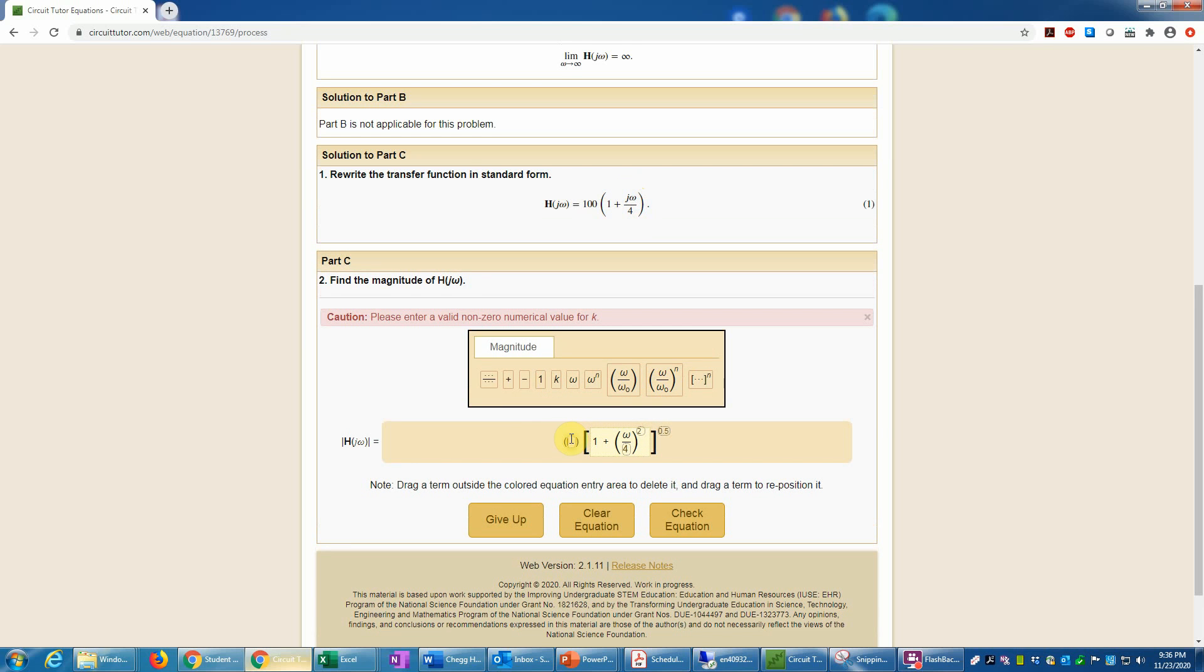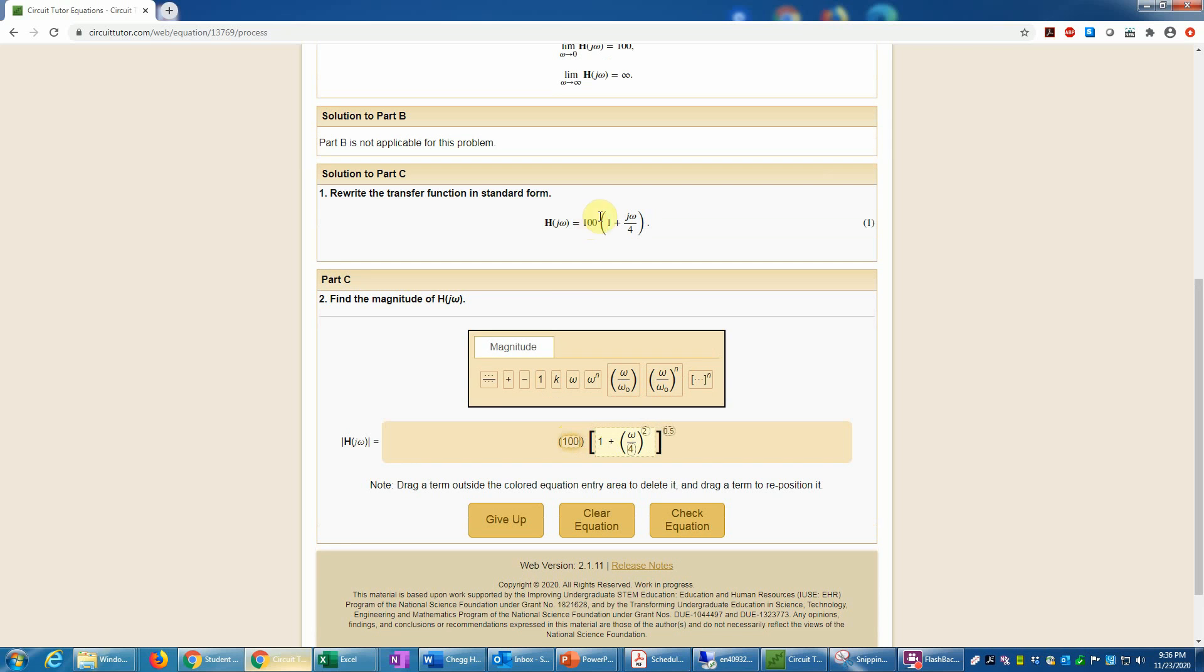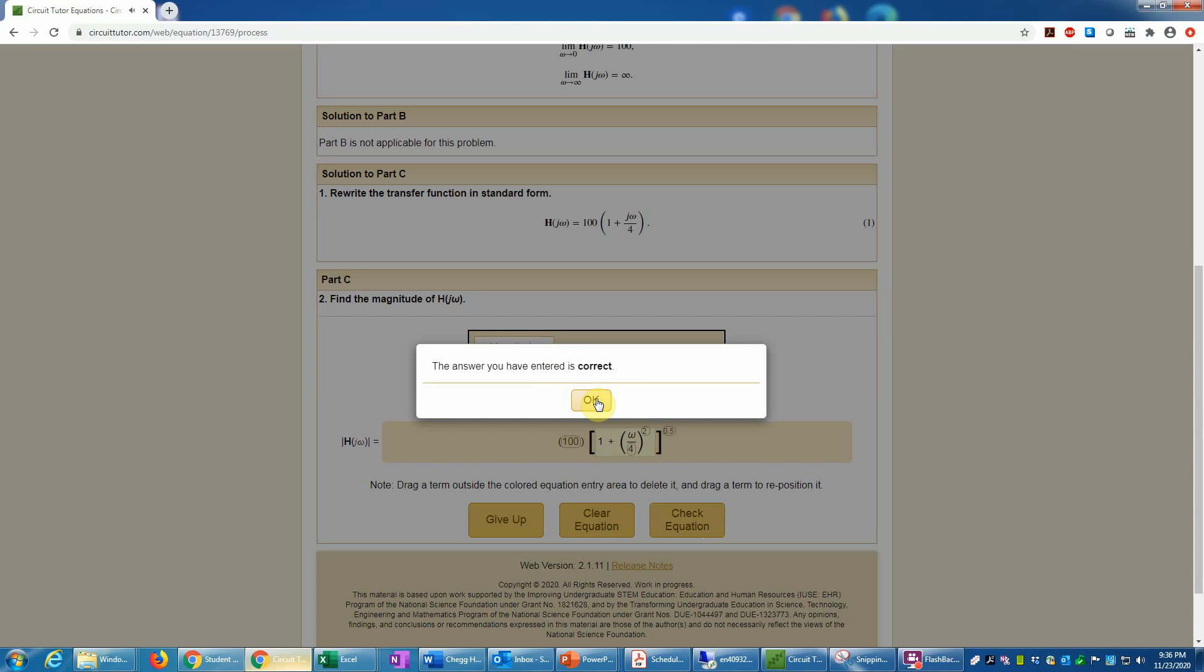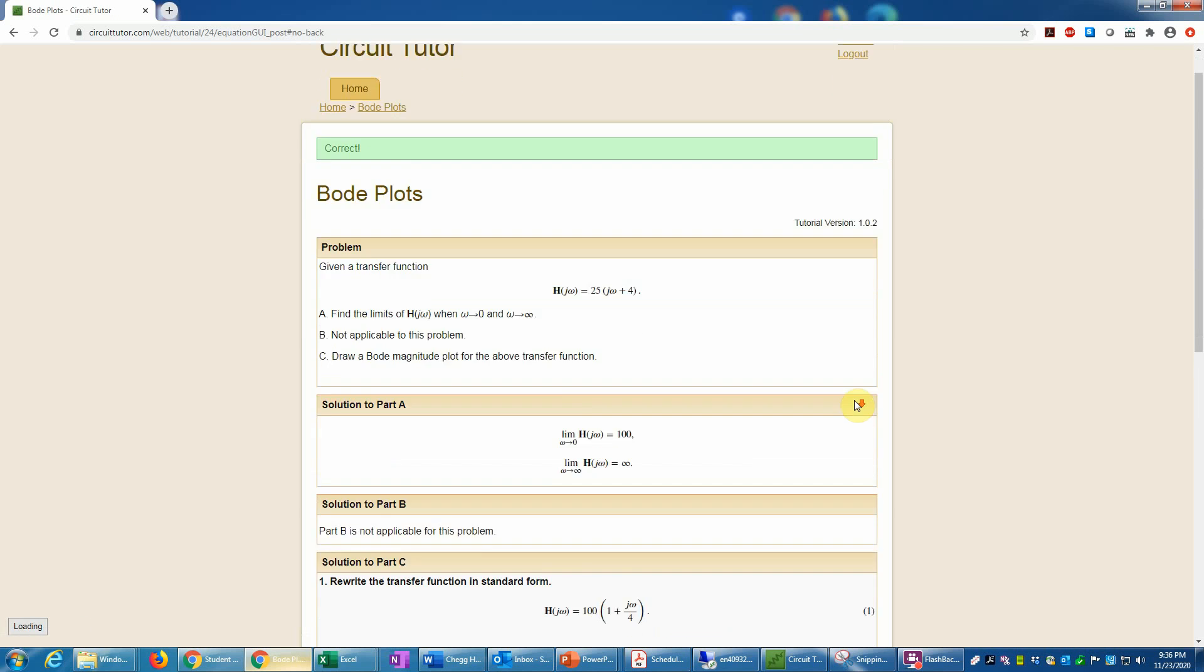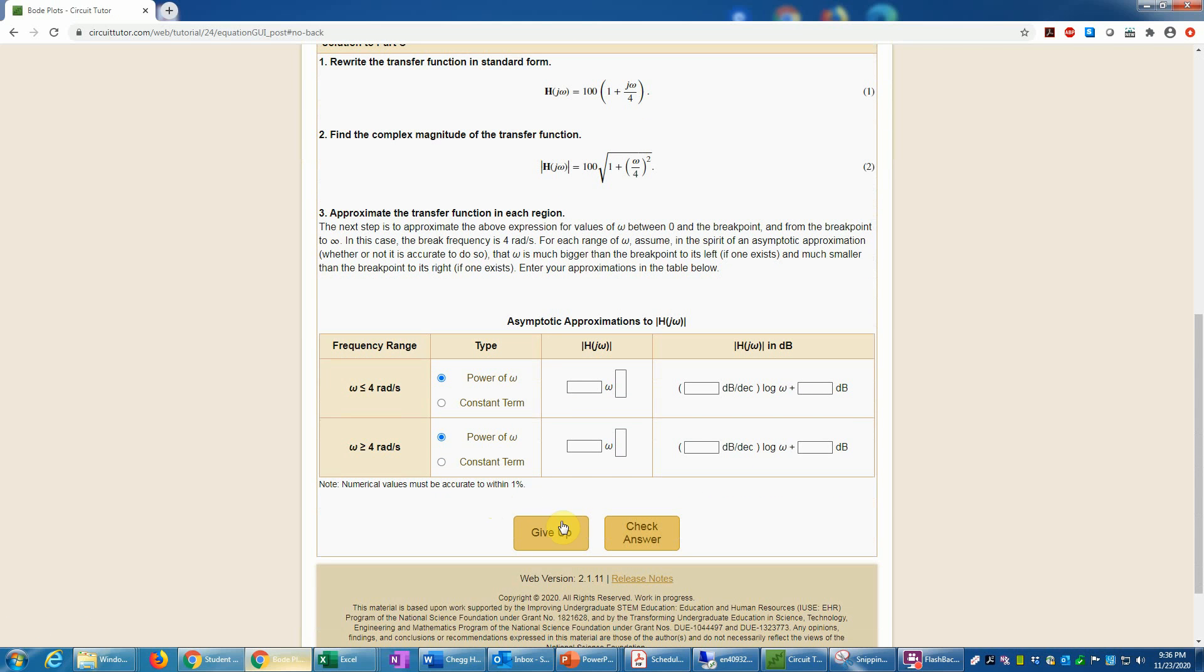That's going to be omega over 4 the quantity squared, because we need the real part squared, which is just 1 squared is 1, plus the imaginary part squared, which is omega over 4 quantity squared. I also need the constant out front, so I'll put that down here, and that will be a factor of 100. The magnitude of a real number is the same as taking its absolute value. If this were negative 100, I would enter positive 100. I'll check that, and that is correct. At any point if you get stuck, you can click the give up button and you'll be shown the complete solution, and then you can continue the problem.